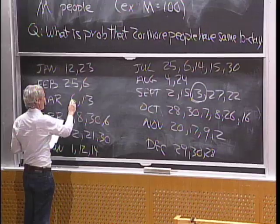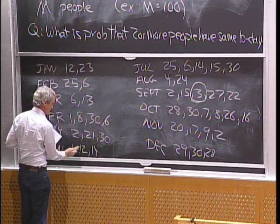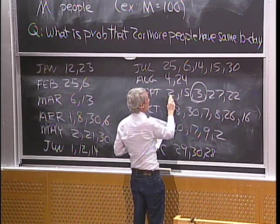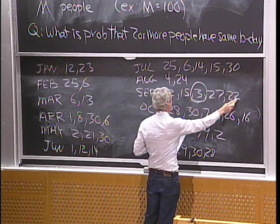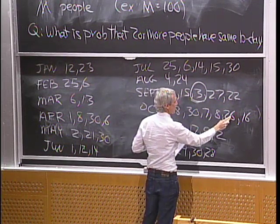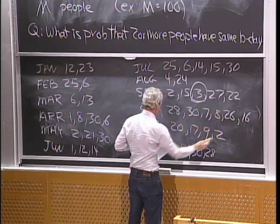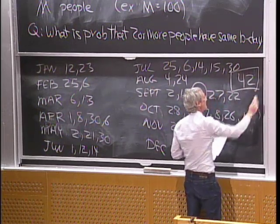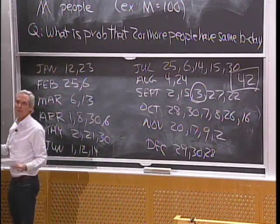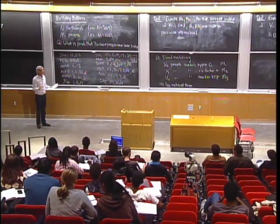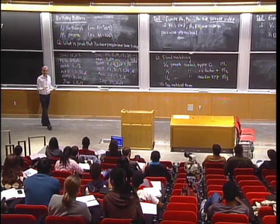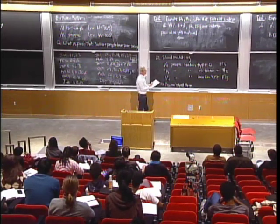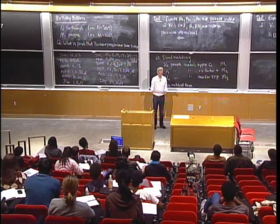It took 42 people to get a match. For n = 365, the magic number is m = 23: by 23 people there's a 50-50 chance of a matching birthday — specifically, the probability of a match at 23 is about 0.506. It seems surprising that 23 suffices, since the chance of any one pair matching is only 1 in 365. But there are many pairs of people, and every pair has a chance to match.